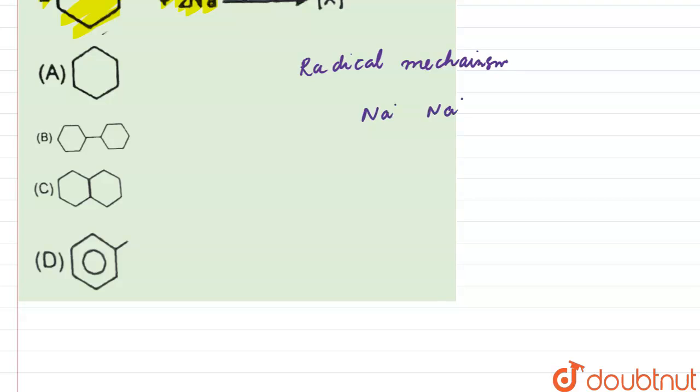Also in bromocyclohexane, what will happen is that this will homolytically cleave, this bond will homolytically cleave, forming radicals over here. So we will be getting two cyclohexane radicals and two bromine radicals.